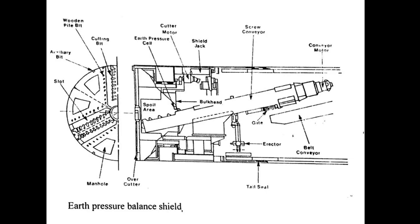The TBM tunnel boring machine is designed for a particular diameter — 3 meters or 4 meters. After fixing the surface diameter, excavation starts. The excavated material is collected and transferred to the screw conveyor visible inside the tunnel. After the screw conveyor, the waste material is transferred to a belt conveyor.